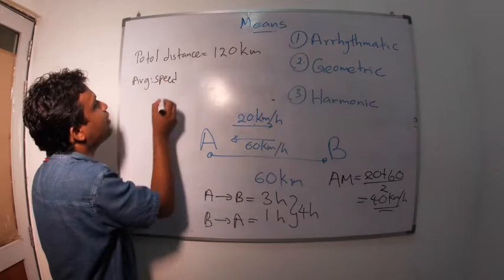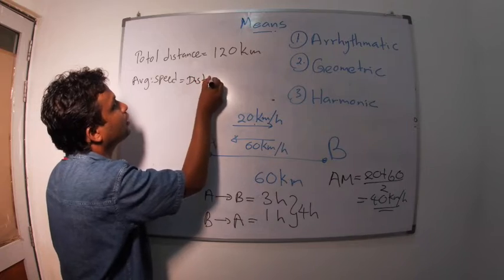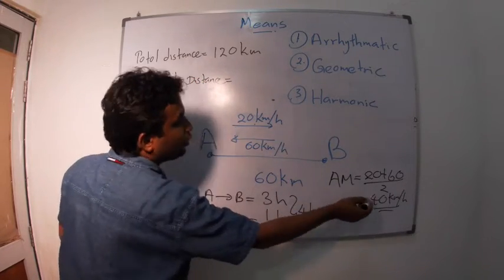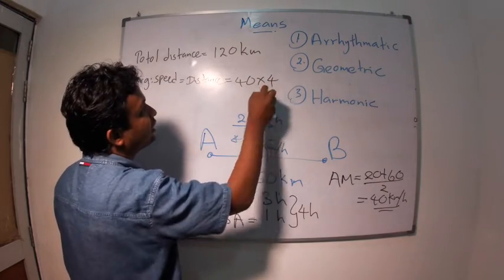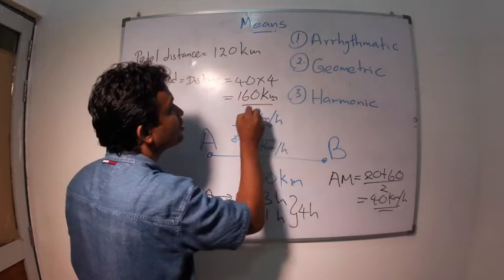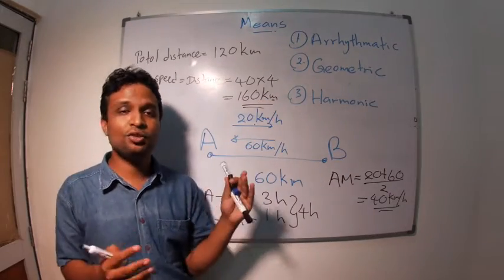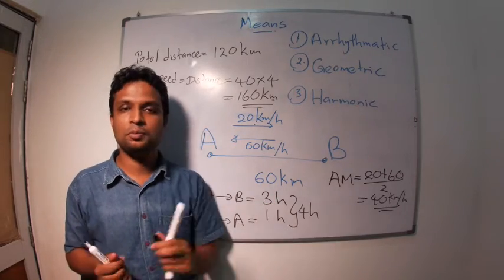But, average speed related distance equals 40 kilometers per hour. Four hours, it must be 160 kilometers. There's a huge discrepancy between these two if we get arithmetic mean. So, what is the solution?